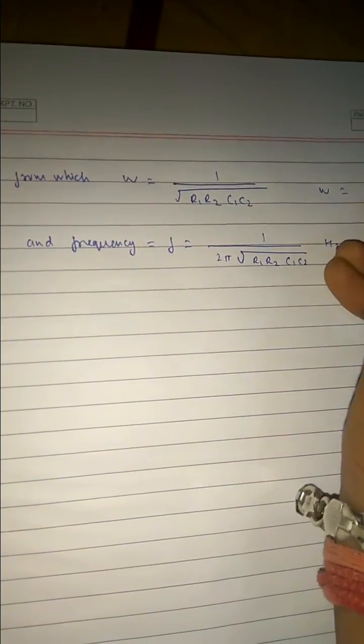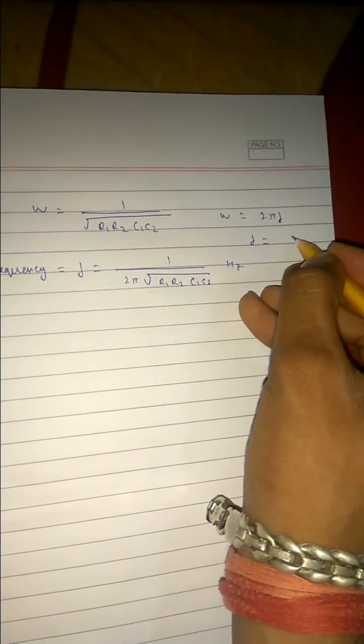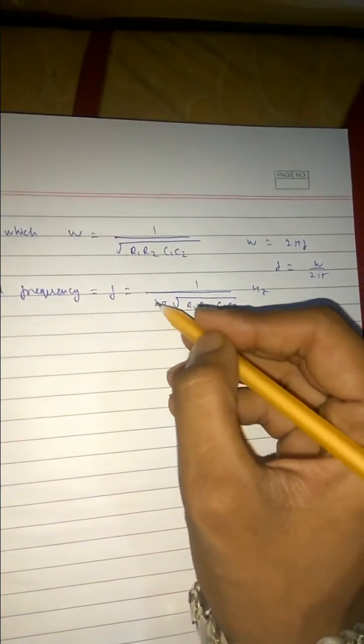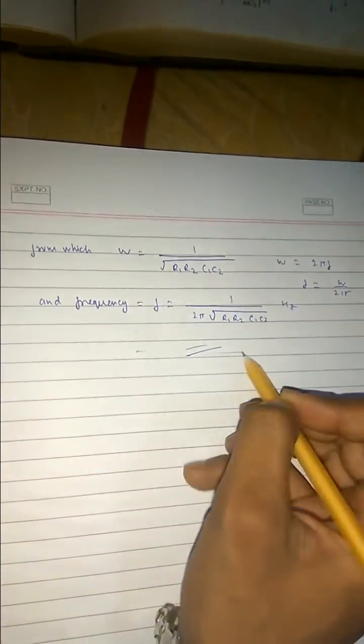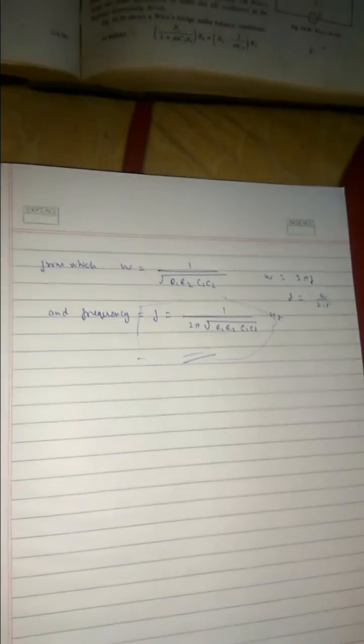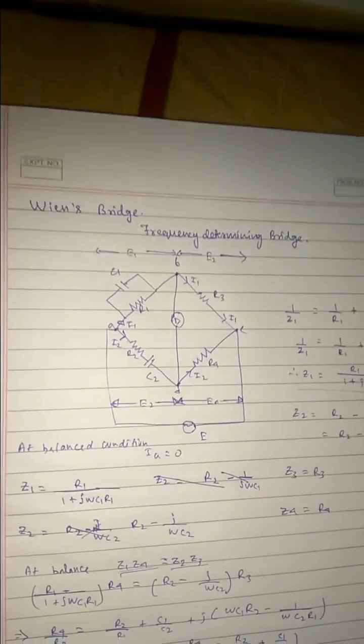So as we know, omega equals 2πf, so f equals to omega by 2π. So we get the value of frequency with the help of Wien's Bridge.